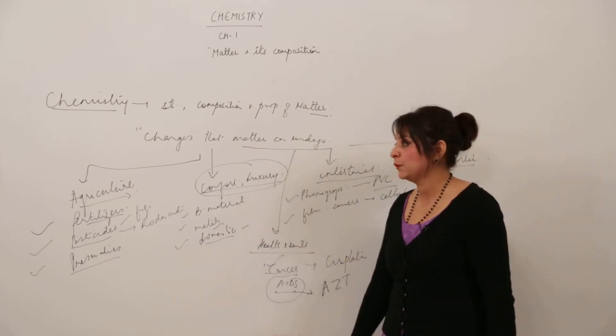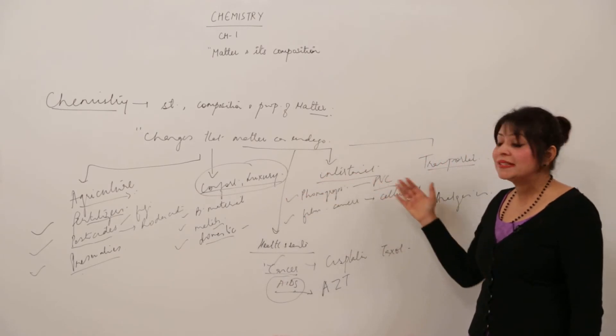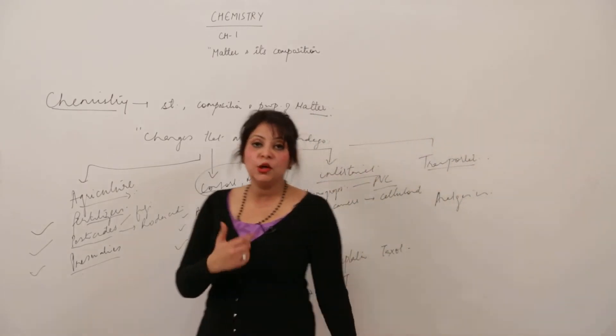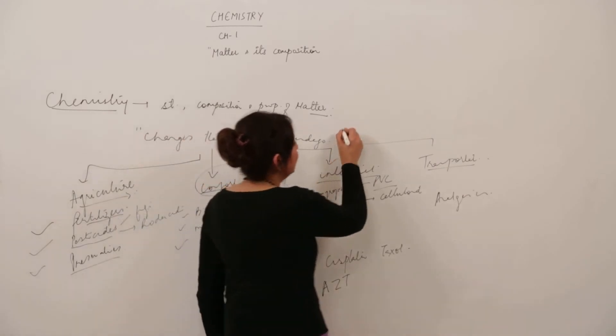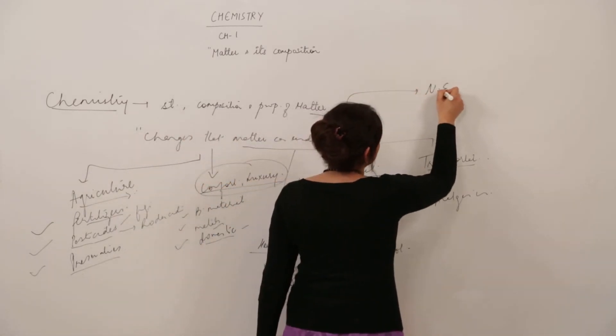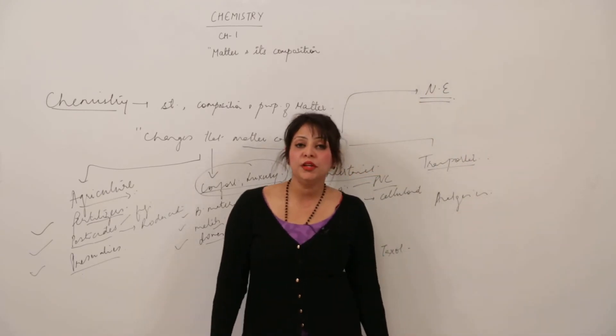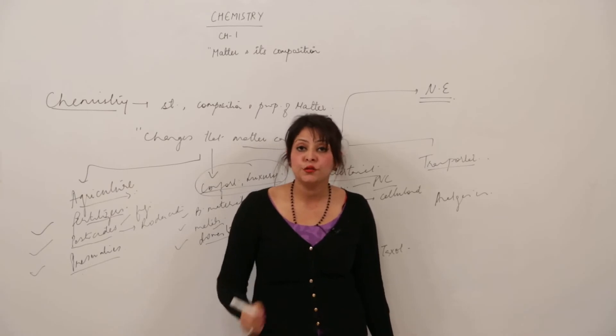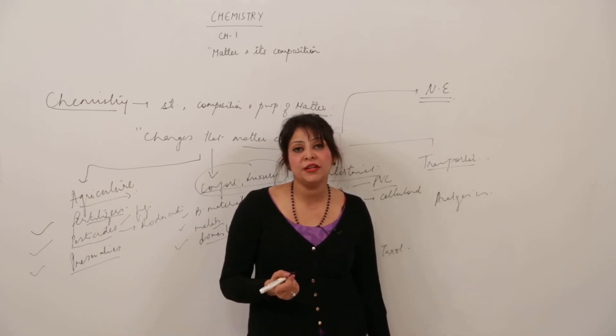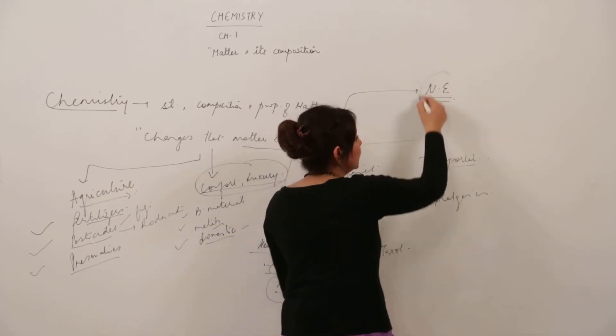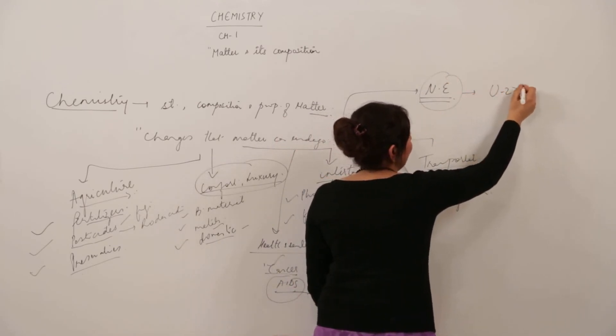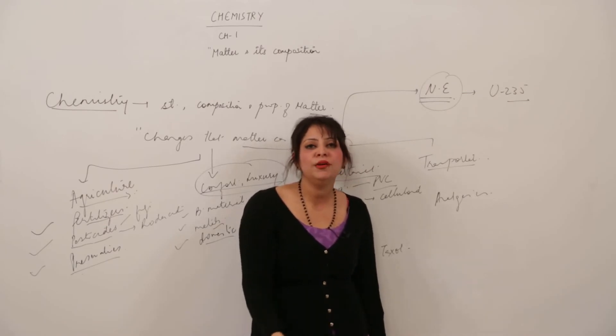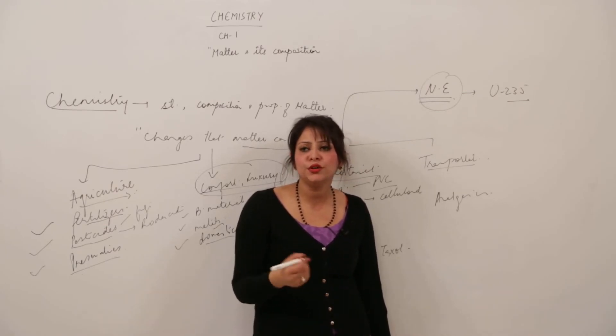Chemistry also helps countries by building alternative energy sources like nuclear energy. As population rises, natural resources are depleting, so we need alternatives. Nuclear energy, mostly generated in nuclear reactors using uranium-235, is a chemical compound. The enrichment process and reactors all involve chemistry.